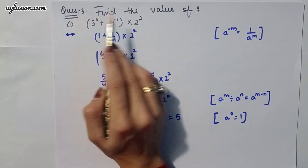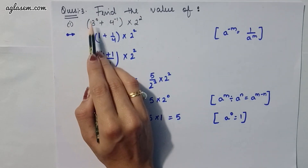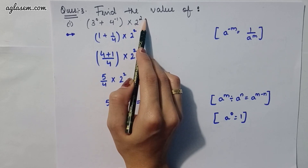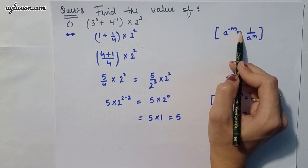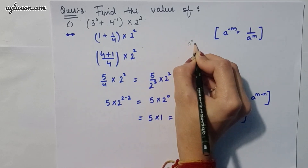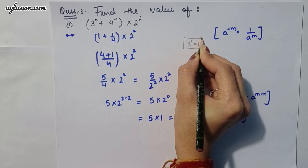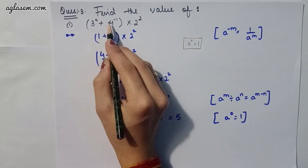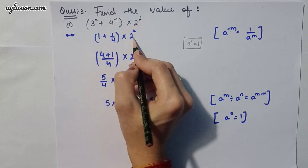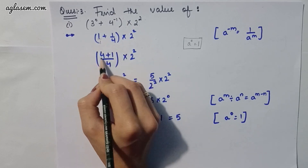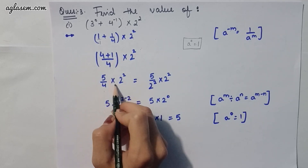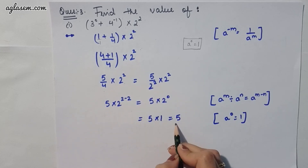Moving to the third question: find the value. Part 1 is 3^0 + 4^(-1) × 2^2. Since a^0 = 1, we have 3^0 = 1. Then 4^(-1) = 1/4. Taking the LCM we get (4 + 1)/4 × 2^2, that is 5/4 × 4, which gives the answer 5.